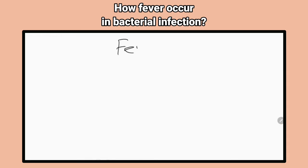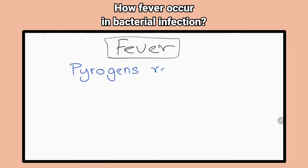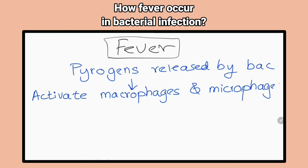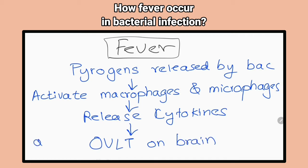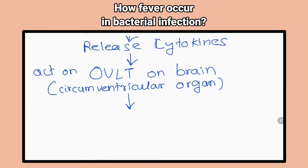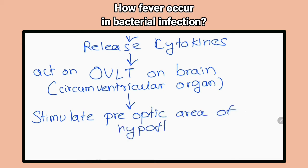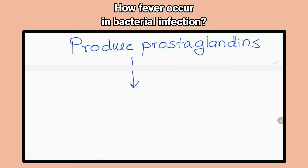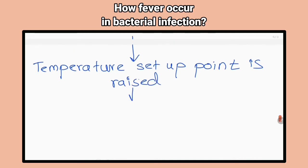How does fever occur in bacterial infections? Pyrogens released by bacteria activate macrophages and microphages to release cytokines. They act on the vascular organ of lamina terminalis of the brain, which in turn activates the preoptic area of the hypothalamus to release prostaglandins. Cytokines released by cells in the central nervous system can directly act on thermoregulatory centers. The temperature set point is raised by the actions of prostaglandins on the hypothalamus, activating heat-gaining mechanisms, resulting in fever.